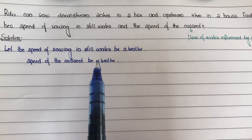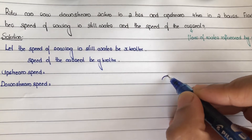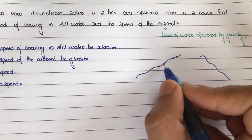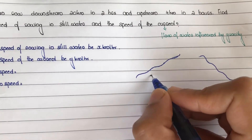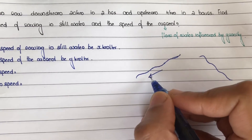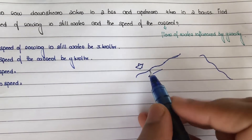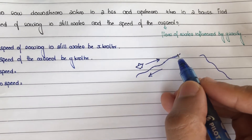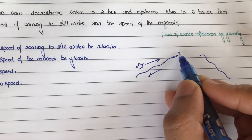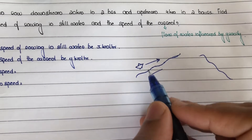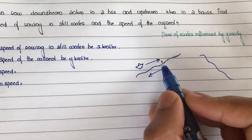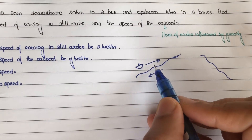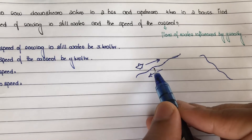Next step: find upstream and downstream speed. The flow of water is in the downward direction. Upstream means the boat moves opposite to the stream flow — that is, toward the upward direction. So when a boat goes upstream, its speed gets reduced by the speed of the stream, because of the opposite direction.